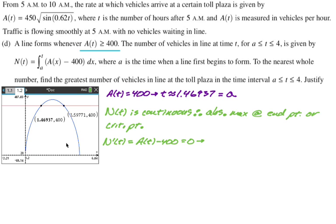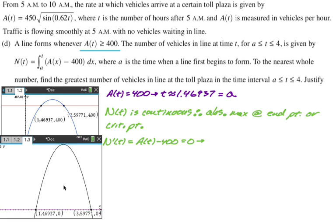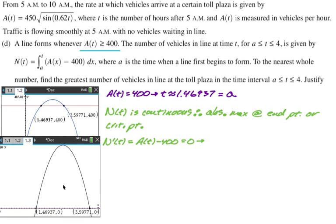Now we're going to need critical points. So I'm going to say that N prime of t is A(t) minus 400, by the second fundamental theorem, equals 0. And then I need to know when that happens. That's obviously going to happen at 1.46937 and at 3.59771. So 3.59771 is the critical point on the interval. So I said t is approximately 3.59771, and I'm setting that equal to P because I don't want to write that number again.